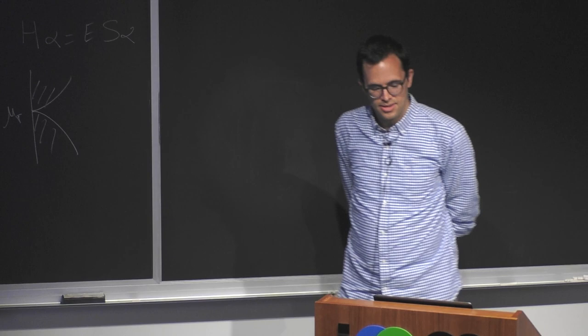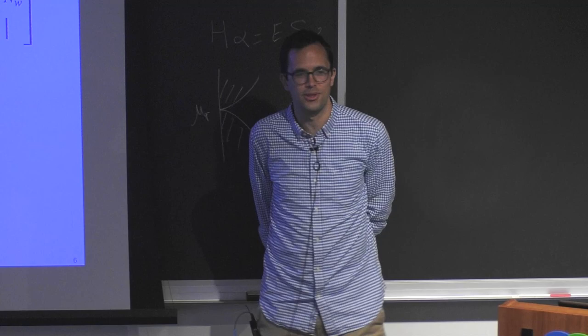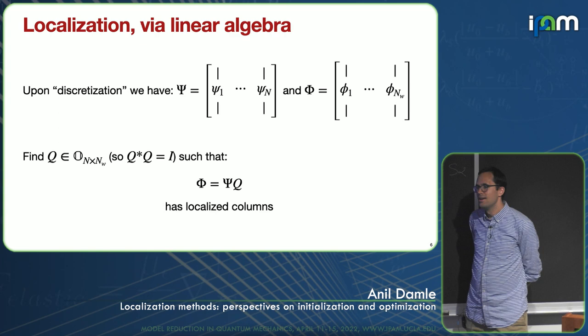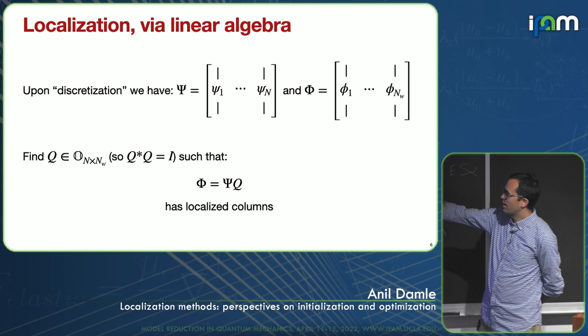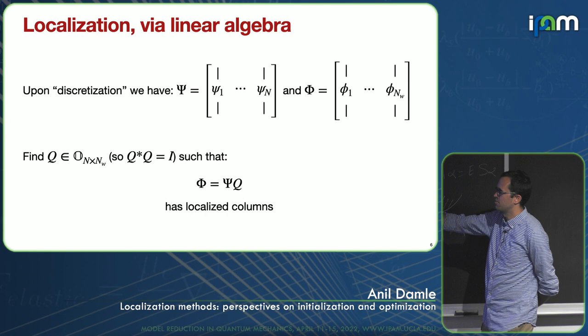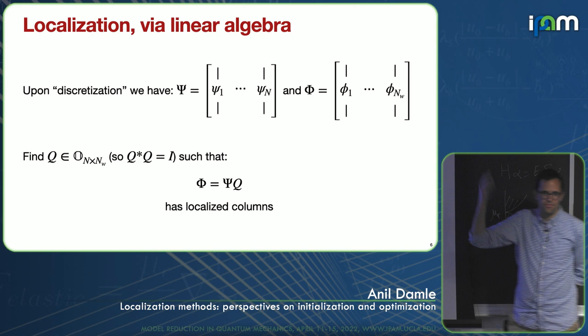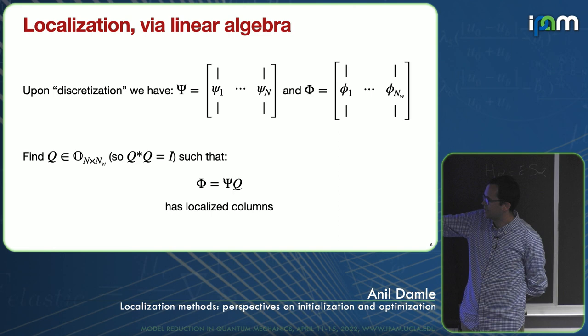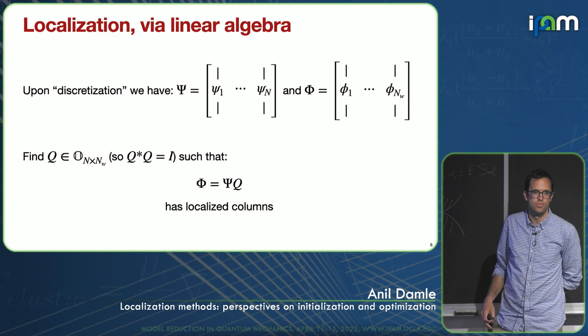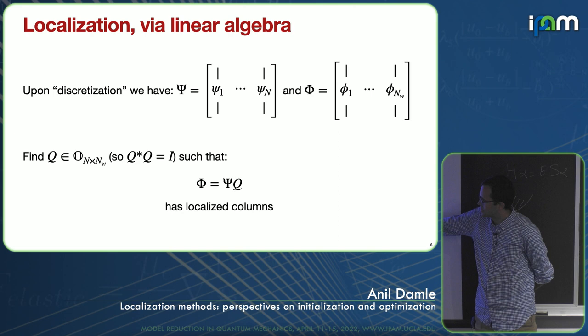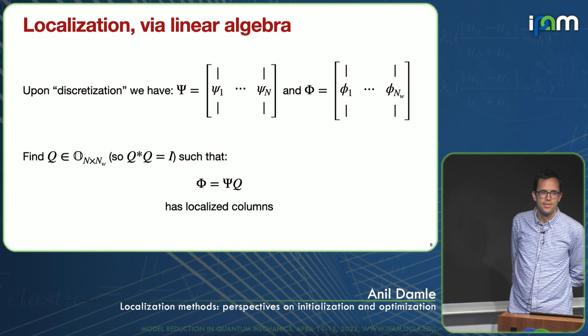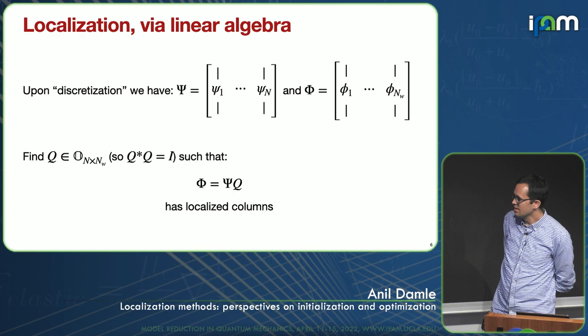I'm in computer science and a numerical linear algebra person by background, so I think of this as a linear algebra problem. Upon discretization, I can view this as a basis transform problem. When NW is N, I have some matrix psi — each column is one of my eigenfunctions — and what I want is a unitary matrix Q (or subunitary when NW < N, with orthonormal columns but not rows) such that I can write my local functions phi as psi times Q. So I'm looking for this unitary or subunitary matrix that transforms the basis I have to the basis I want.